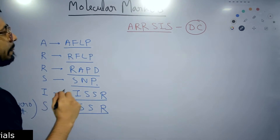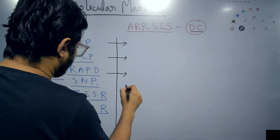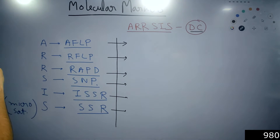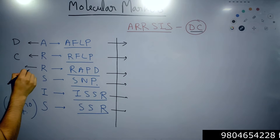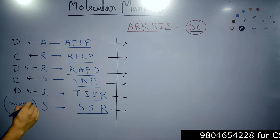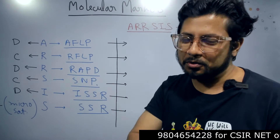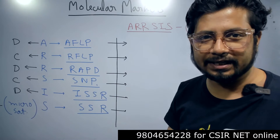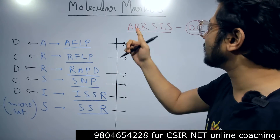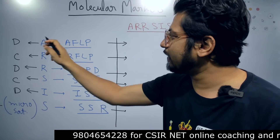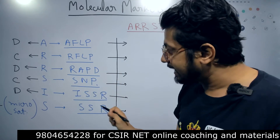Now the second important concept is whether they are dominant or co-dominant. For that we have DC — DC Comics, remember. We are building a table. The pattern alternates: D, C, D, C, D, C. That's it — DC, DC, DC. So: AFLP is a dominant marker, RFLP is a co-dominant marker, RAPD is a dominant marker, SNP is a co-dominant marker, ISSR is a dominant marker, and SSR is a co-dominant marker.